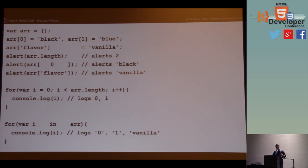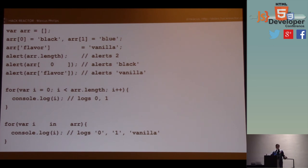Audience question: in that same for-in loop, wouldn't it return '0', '1', and 'flavor'? Yes, that's just a typo on the slides. So is it the mere aspect that we assign to empty square brackets that gives it the length property? In JavaScript, empty square brackets — or square brackets at all, whether they have elements in them or not — it's an array literal. It generates an array much like using the array constructor. The length property will be magic and available from the inception of that array.